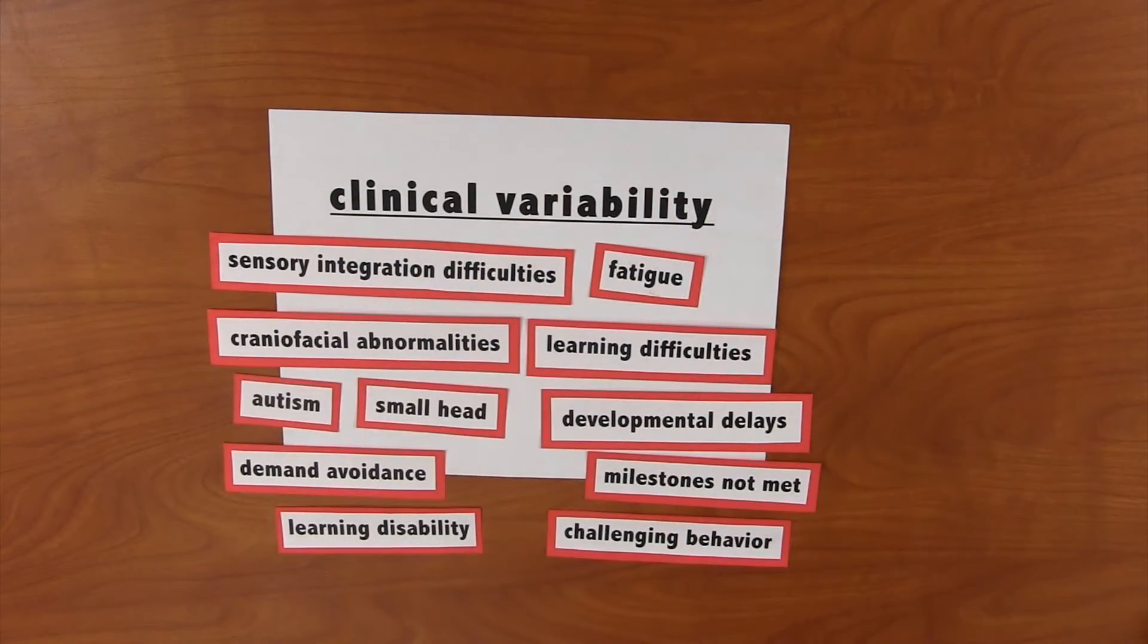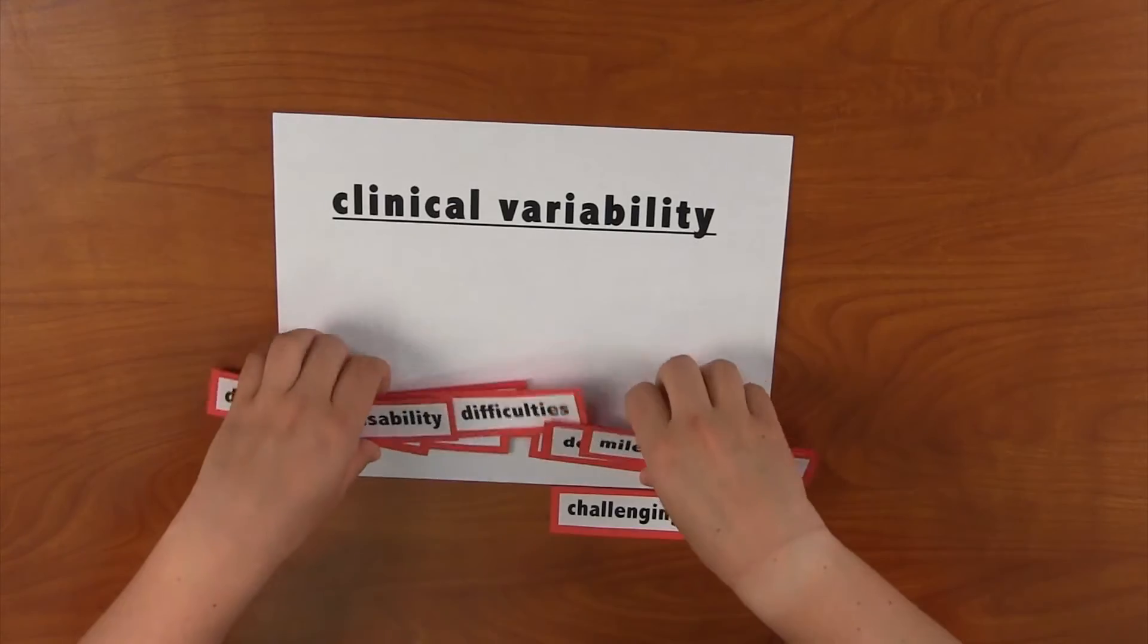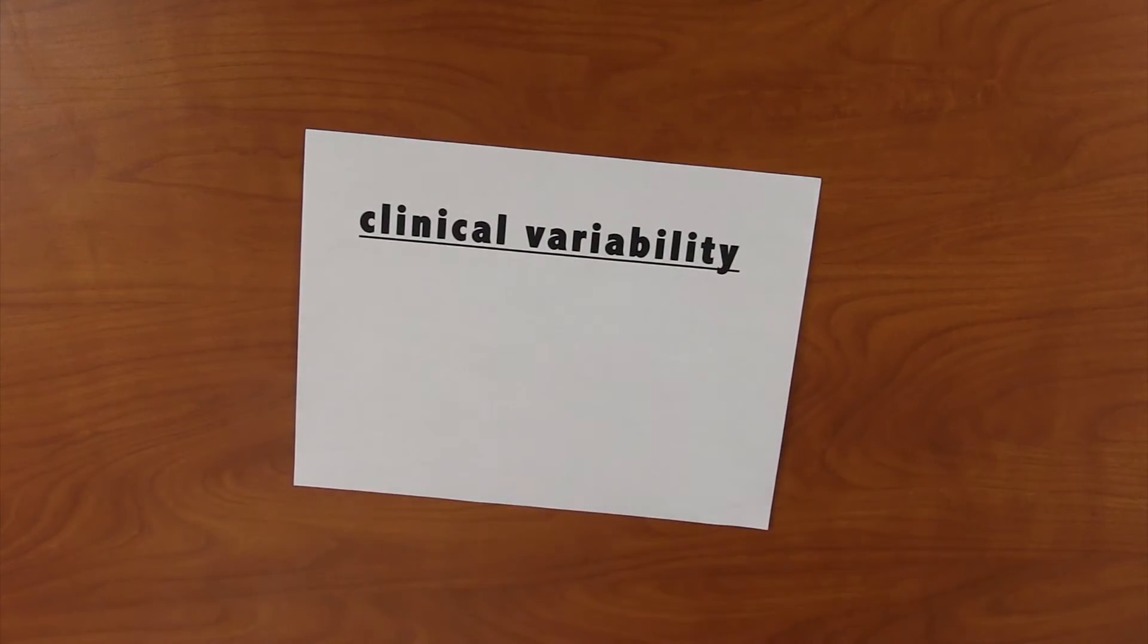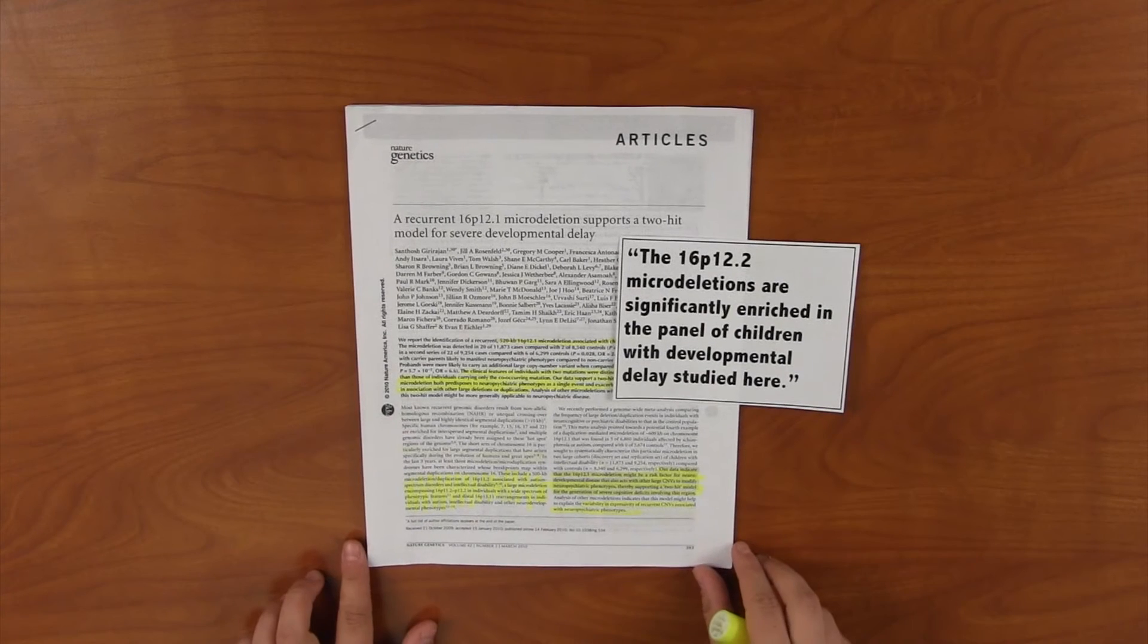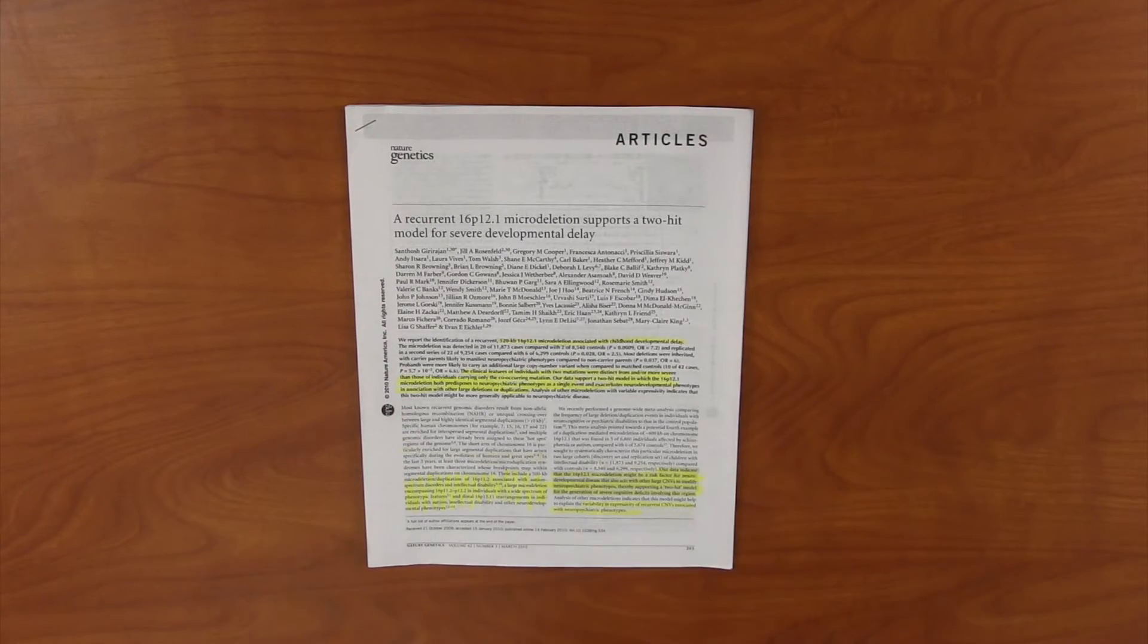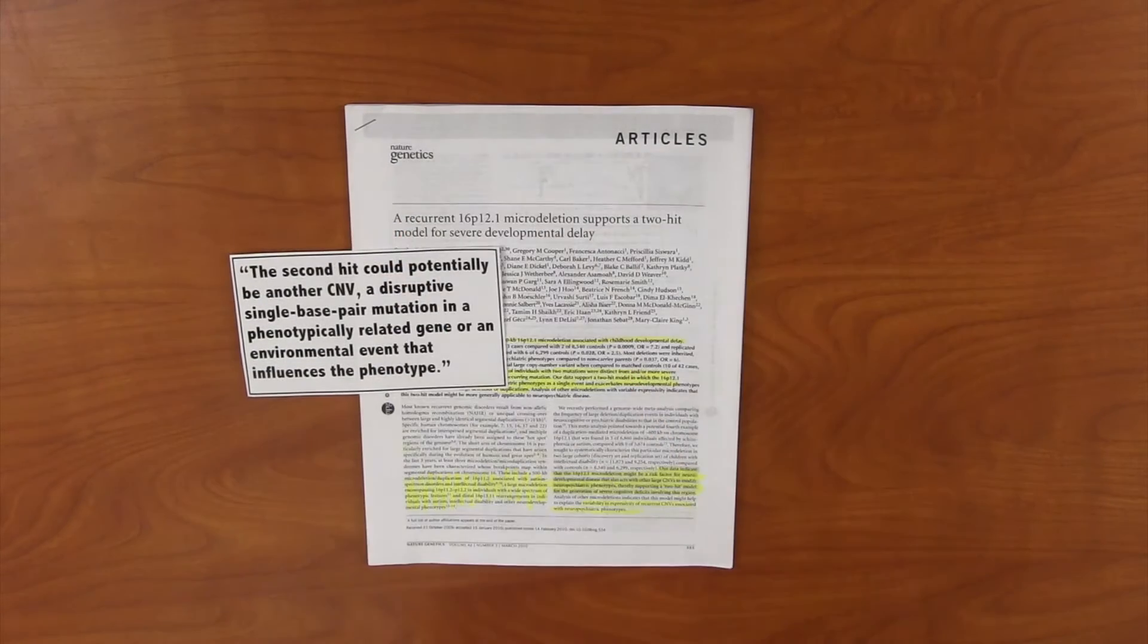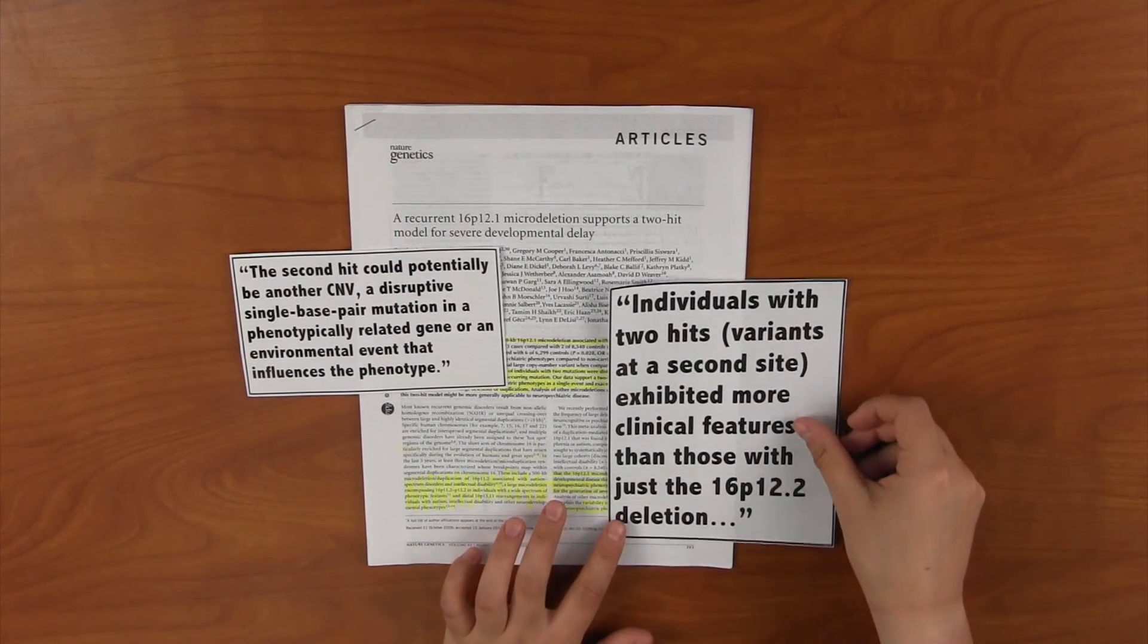Neurodevelopmental disorders with underlying genomic causes are known to present themselves with wide phenotypic variability. Previous studies and research conducted by Santosh demonstrated first that this specific chromosomal deletion is in fact associated with neurodevelopmental delay. And second, that other areas in the genome that are genetically modified or mutated are likely the cause for such clinical variability.